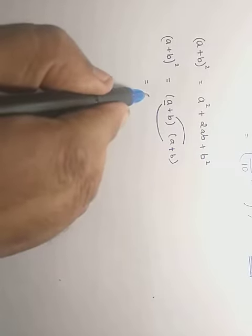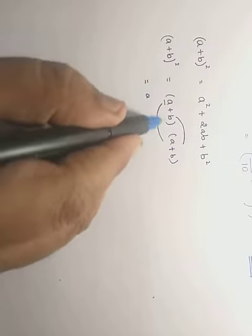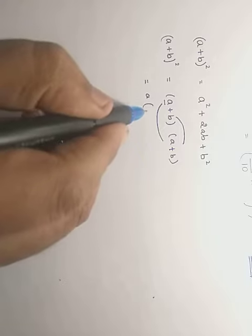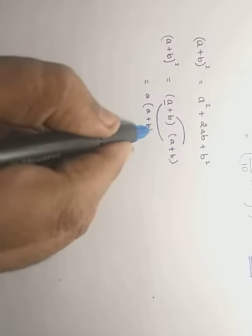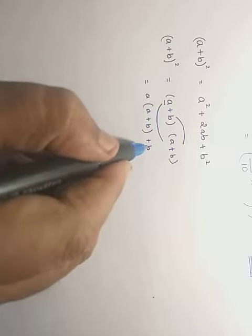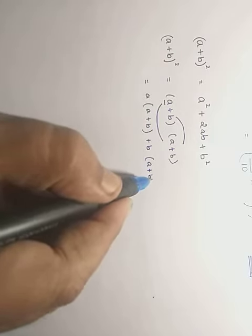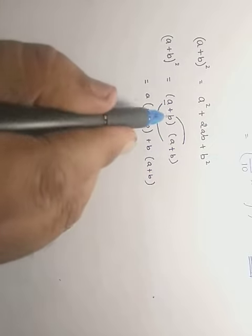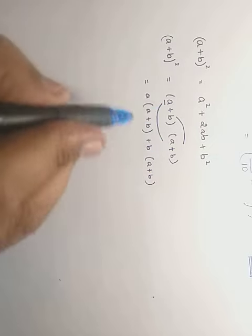Let us look into that. a bracket is opened and remaining bracket is (a + b), and after a what remains is plus b and again (a + b). That is we are multiplying a and (a + b) plus b and (a + b).